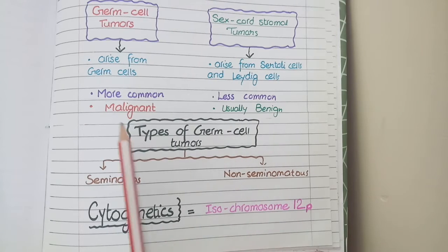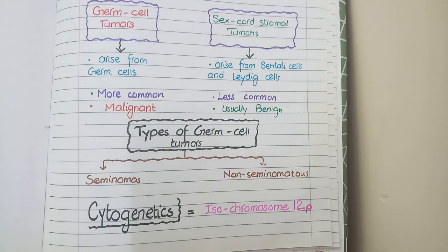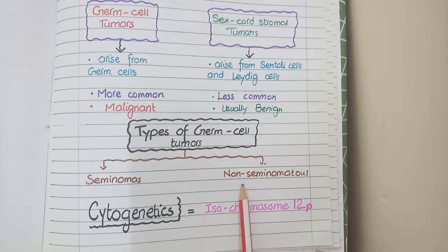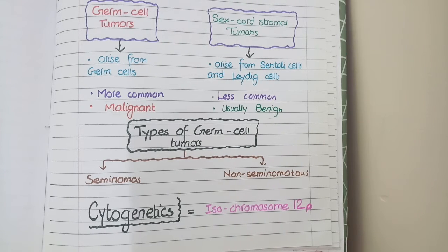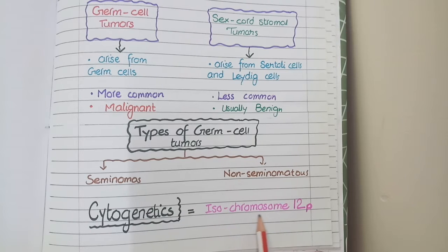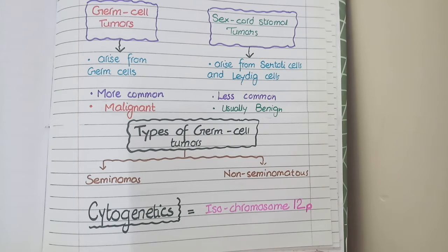As almost all testicular tumors are germ cell tumors, we will discuss only them. Germ cell tumors can be categorized into two categories: seminomas or seminomatous tumors, and non-seminomatous tumors. One very important point to memorize is the cytogenetic abnormality commonly found in testicular neoplasms — the presence of extra copies of the short arm of chromosome 12 (12p), called isochromosomes of the short arm of chromosome 12.